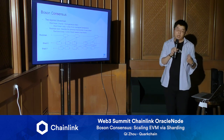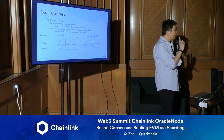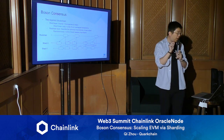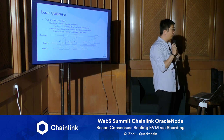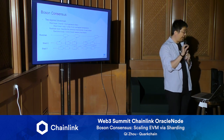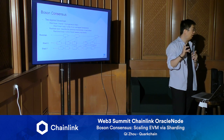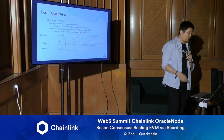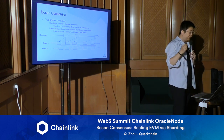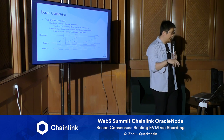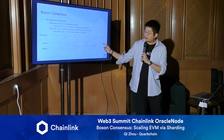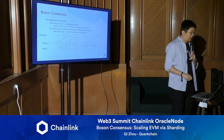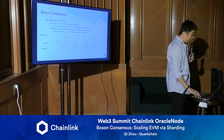We also have a core root chain layer, which is just a single chain. It does not process any transactions. What it does is describe the canonical chain of each shard by including, for example, the headers or hash values of the tip of each chain. Each shard block has a hash pointer linking it to the previous block, while the root chain includes the hash pointers of those shard blocks.